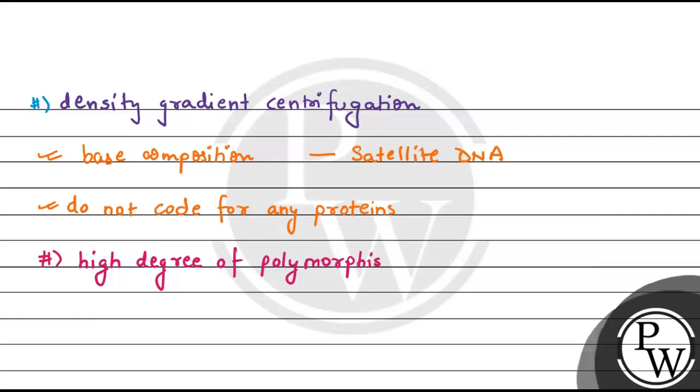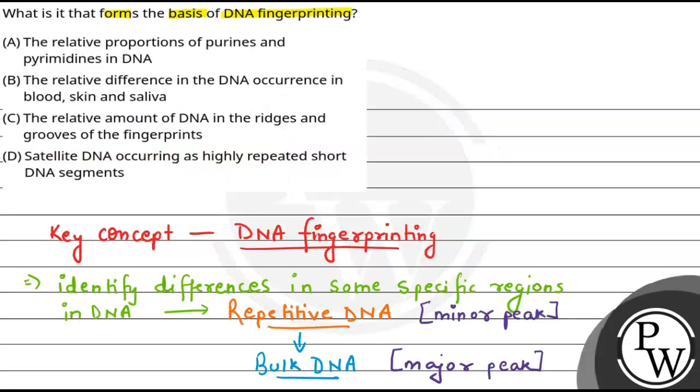They form the basis of DNA fingerprinting, and this degree of polymorphism makes it a tool for forensic applications. From this explanation, the correct option is option D: satellite DNA occurring as highly repetitive short DNA segments. This is the basis of DNA fingerprinting. Hope you have understood it well. Best of luck, thank you.